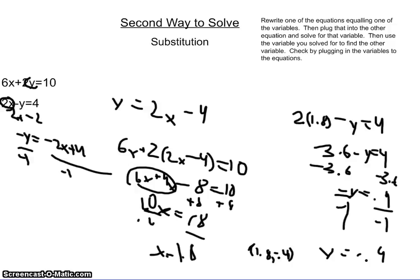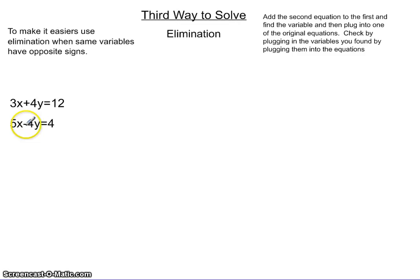Okay. The third way to solve is elimination. You see over here the problem it's 3x plus 4y equals 12 and 5x minus 4y equals 4. To make it easier you use the same variables and opposite signs.